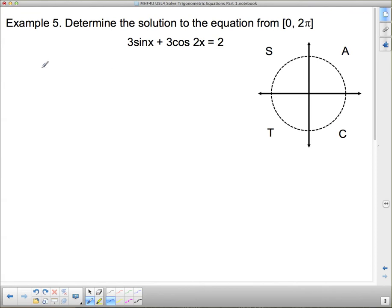Now, if you want to get good communication marks, you're going to say something like, using a double angle formula. Here's what we get. We get 3sin(x) + 3, and we don't want cos(2x) anymore, because cos(2x) is 1 minus 2sin²x, and then that's going to equal 2.